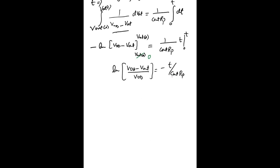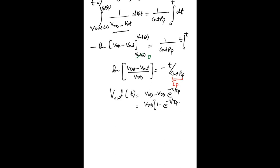Here C_out × R_P can be written as τ_P, the RC time constant for the PMOS circuit. Solving for V_out: V_out(t) = VDD − VDD × exp(−t / τ_P), which simplifies to V_out(t) = VDD × (1 − exp(−t / τ_P)). This is the final expression for V_out during the rising transition.